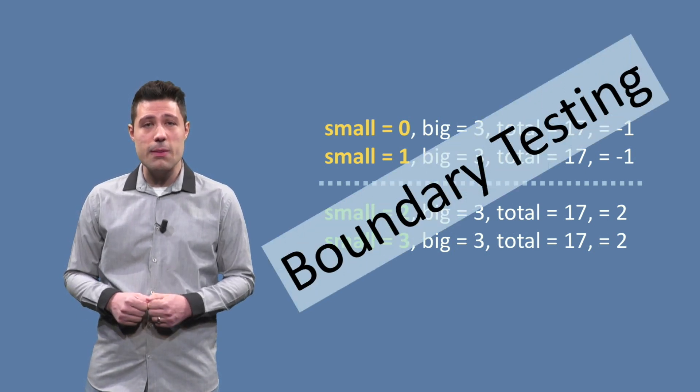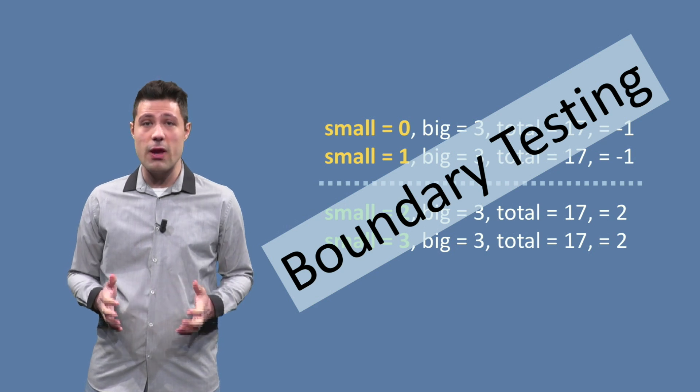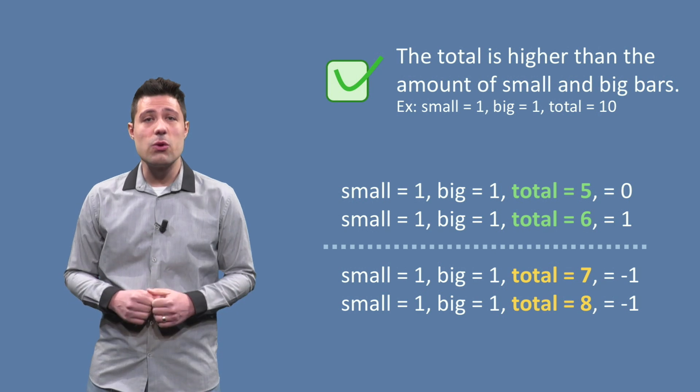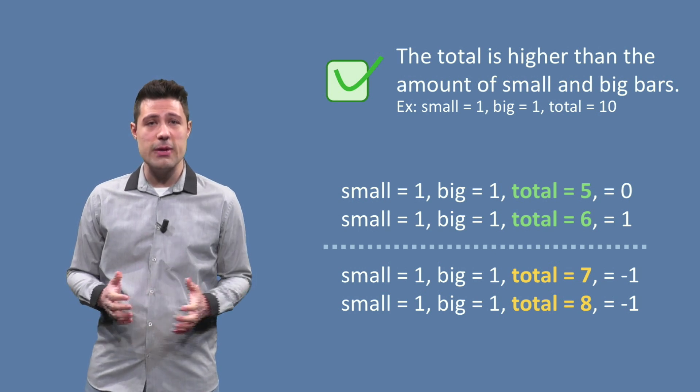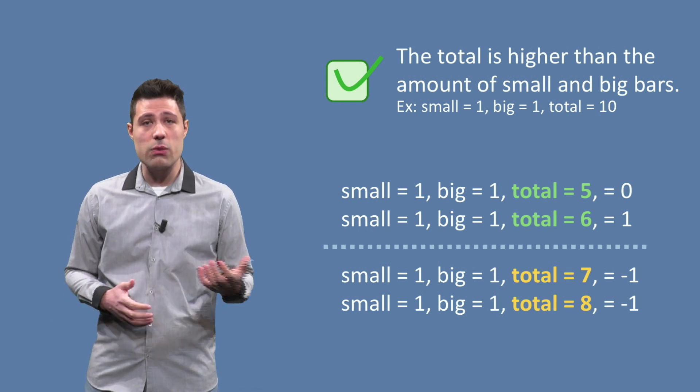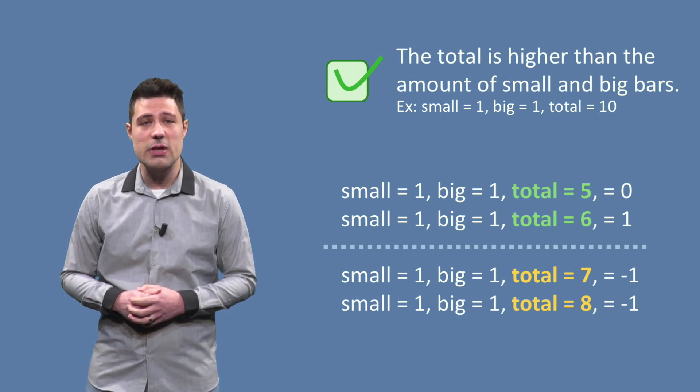So let's think about all the boundaries in the partitions we have created so far. In the first partition, the total is higher than the amount of small and big bars. We thought about small equals 1, big 1 and total 10 as an instance for this partition.